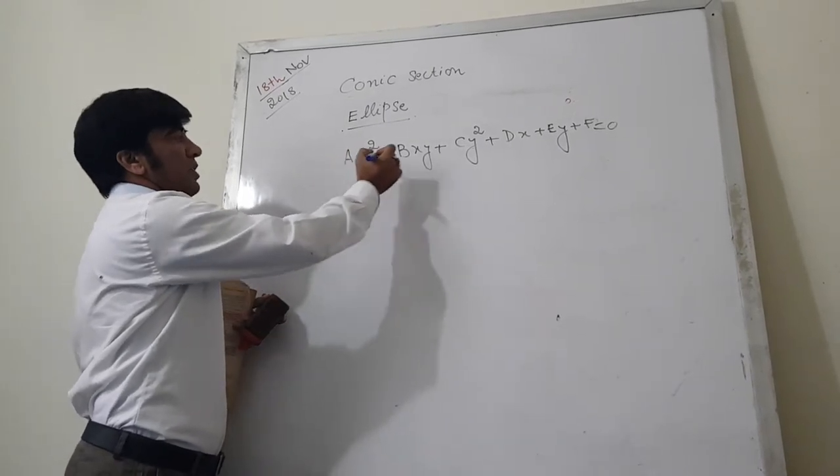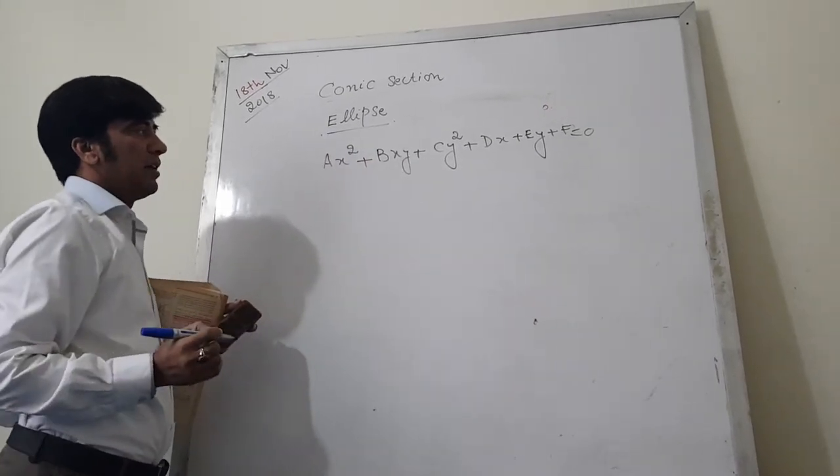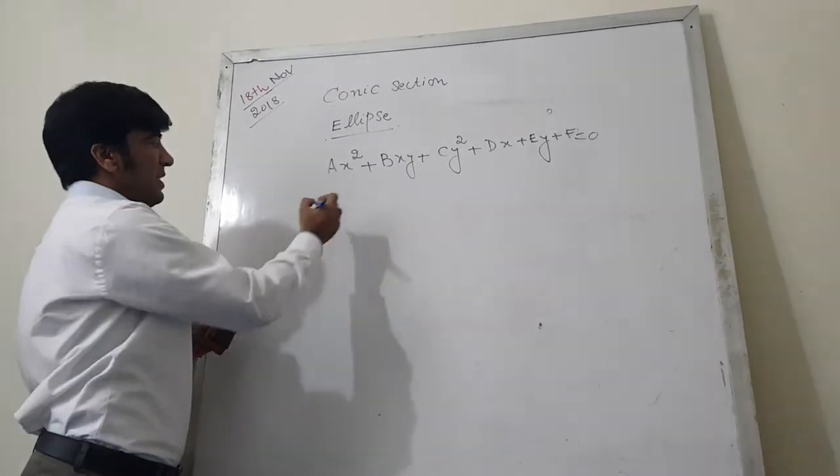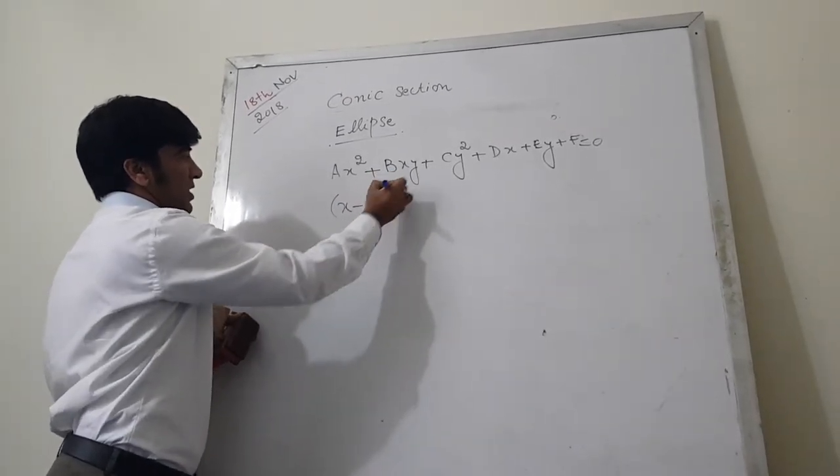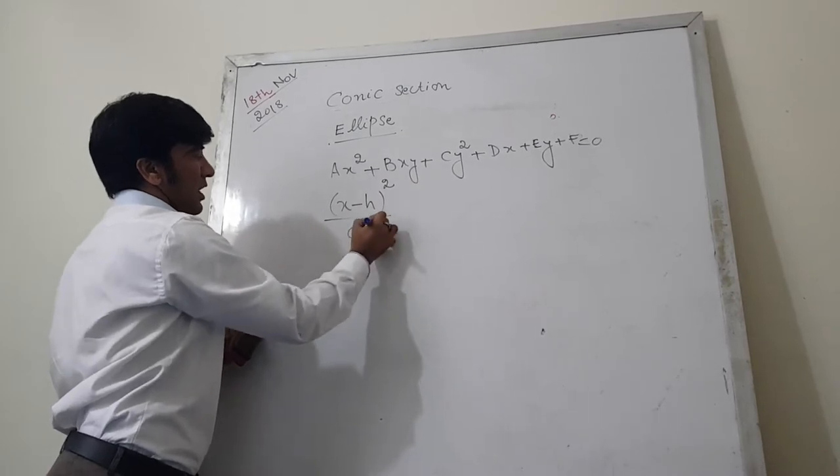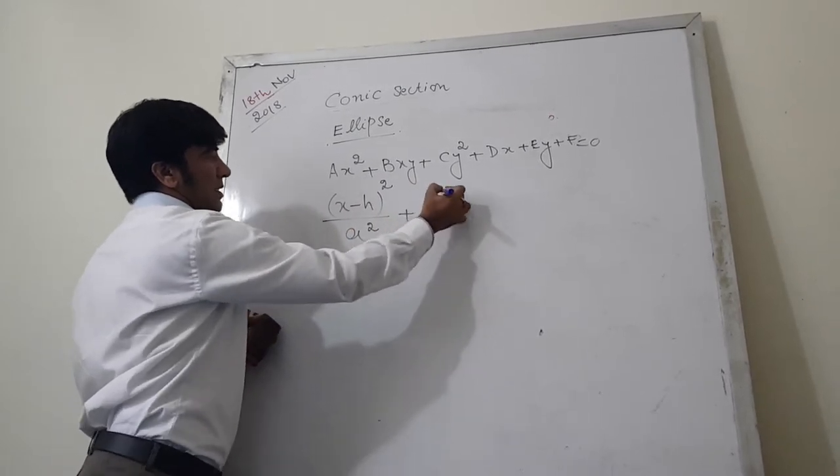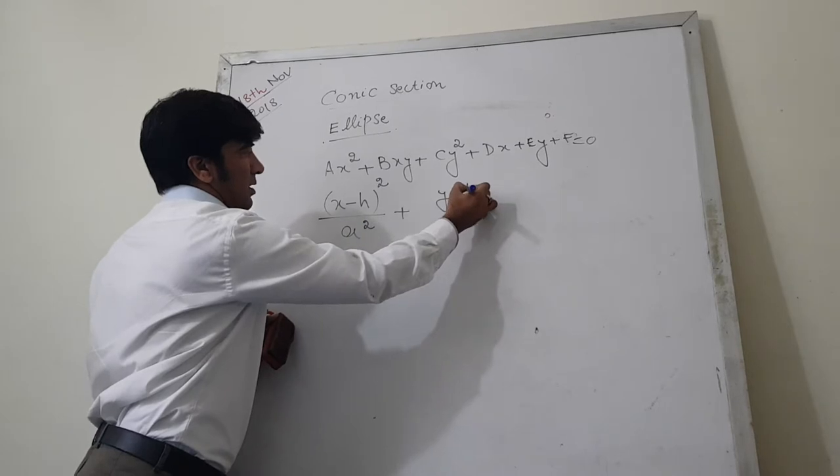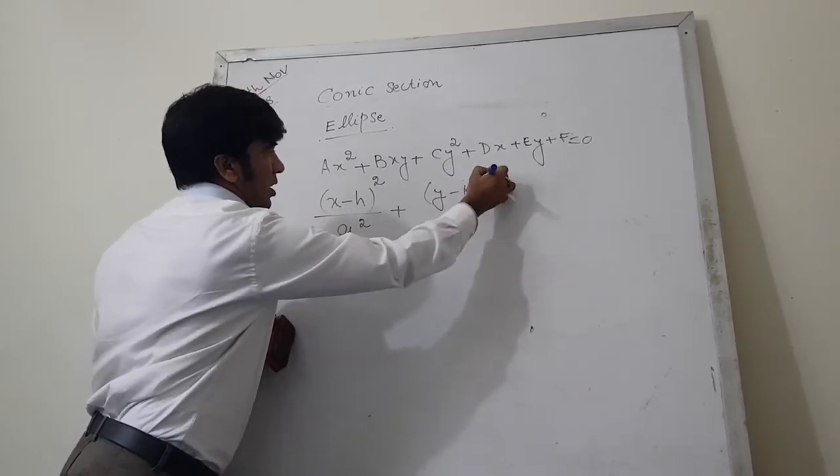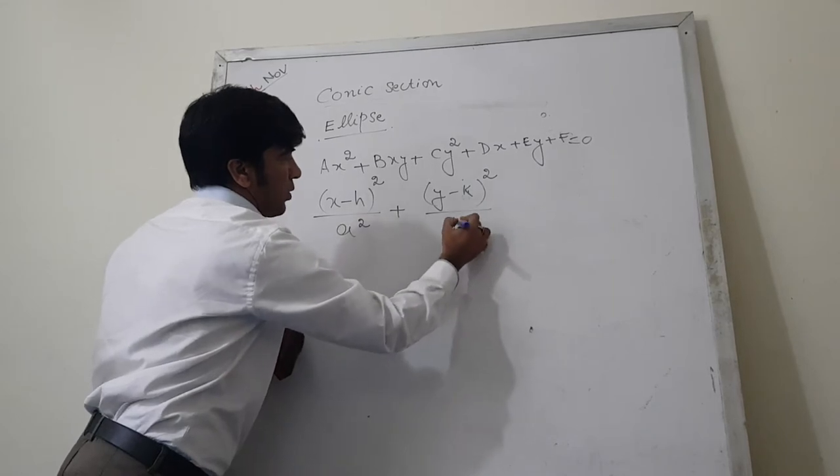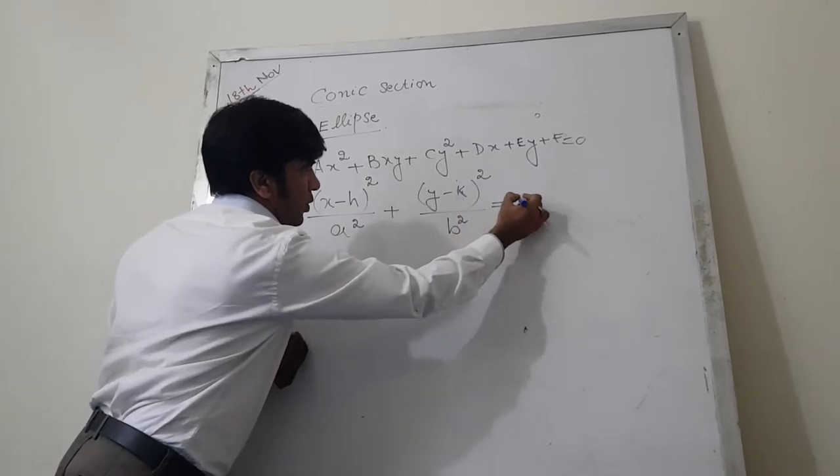Whenever we have this equation and after completing the square we see that we get the form (x-h)²/a² plus (y-k)²/b² equals 1.